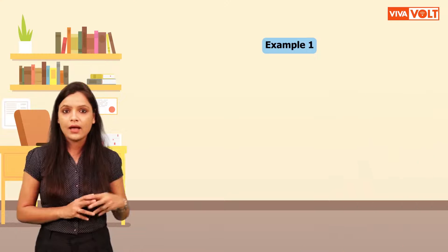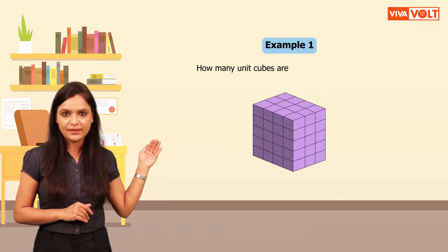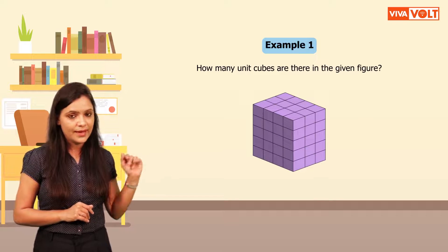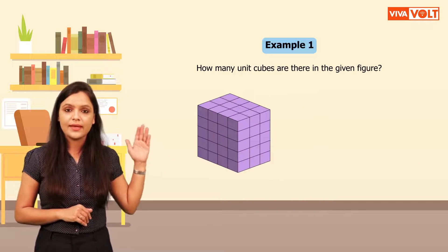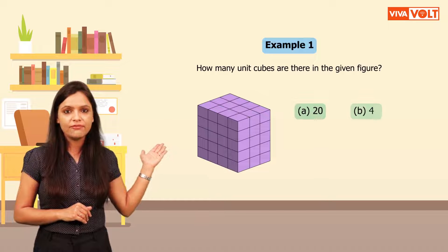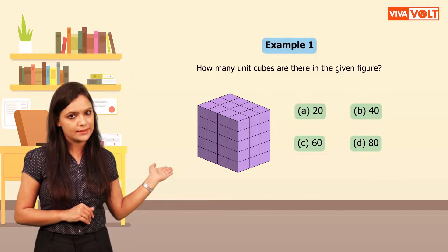Let's look at examples based on cube and dice to understand the concept. How many unit cubes are there in the given figure? And the options are A 20, B 40, C 60, D 80.